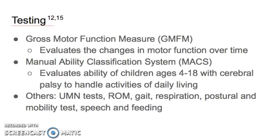One of the standardized tests for CP is the gross motor function measure, which evaluates the changes in motor function over time and is often used to assess the effects of clinical interventions. Another way to classify the severity of movement disability for activities of daily living is to utilize the manual ability classification system, which is a medical classification specifically for children with CP between the ages of 4 and 18.